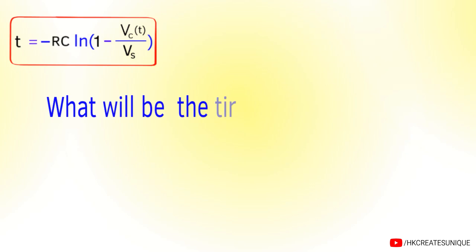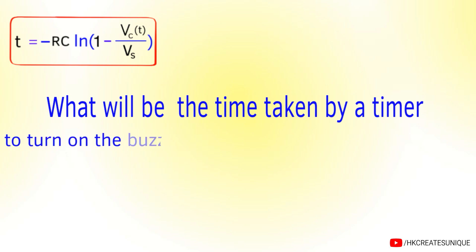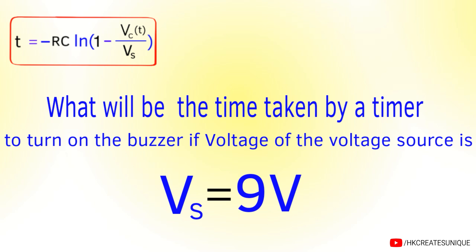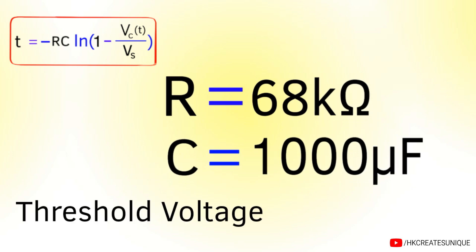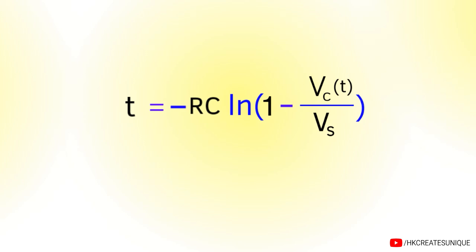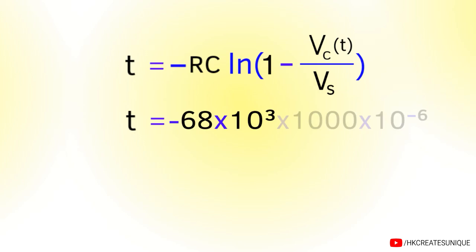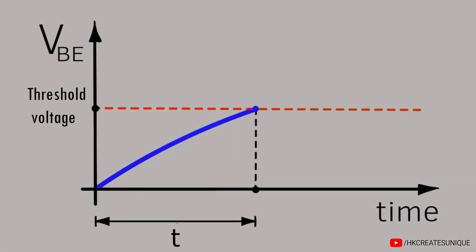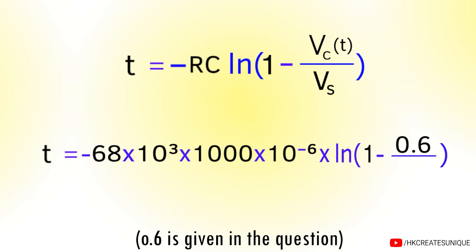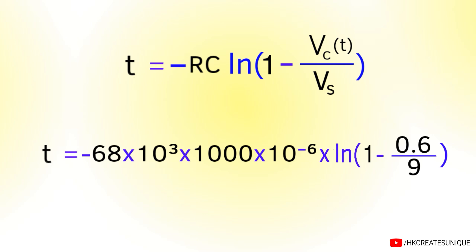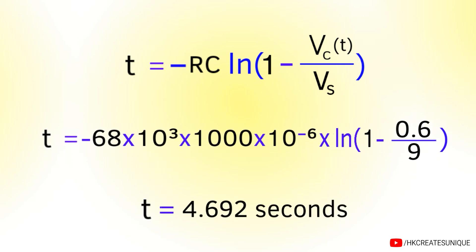What will be the time taken by a timer to turn on the buzzer if the voltage source is 9 volts, resistance is 68 kilo-ohms, capacitance is 1000 microfarads, and the threshold voltage of the transistor is 0.6 volts? Using the equation, with V_C = 0.6V and V_S = 9V, we get time t = 4.692 seconds.